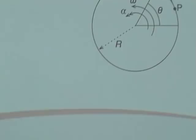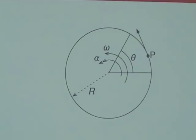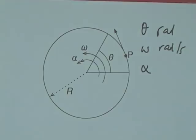First, conventions. This is a disk that's spinning. If you want to look at displacement we use the value theta (θ). If you want to look at angular velocity we use omega (ω), and angular acceleration we use alpha (α). Units are generally: radians for θ, radians per second for ω, and radians per second squared for α.